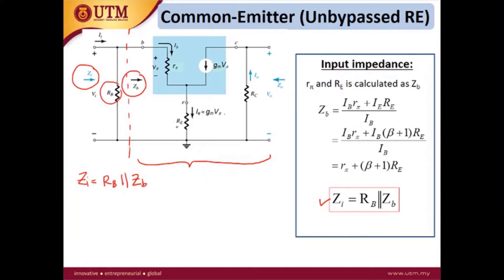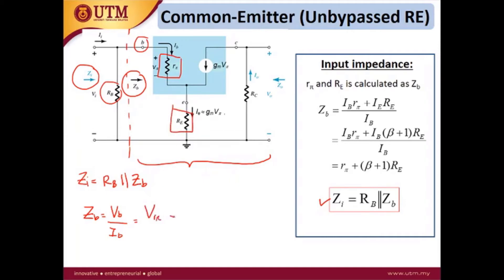What is the definition of ZB? ZB is the voltage at the base point divided by the current at the base point. The current at the base point is iB, and the voltage at the base is the total of the voltage at rπ plus the voltage at RE: Vπ plus V_RE.